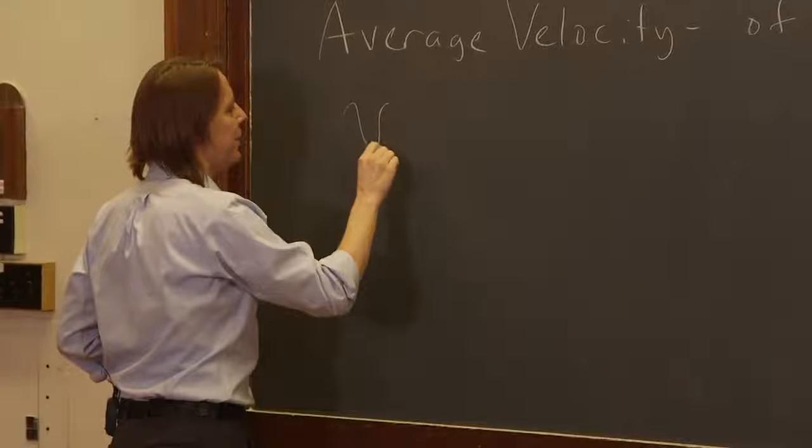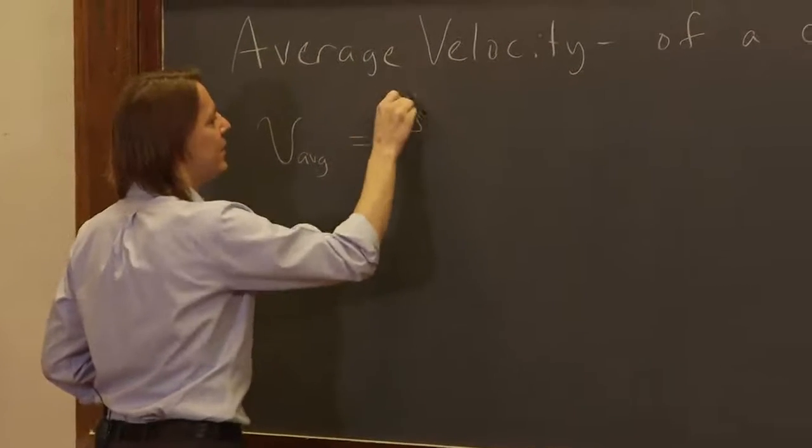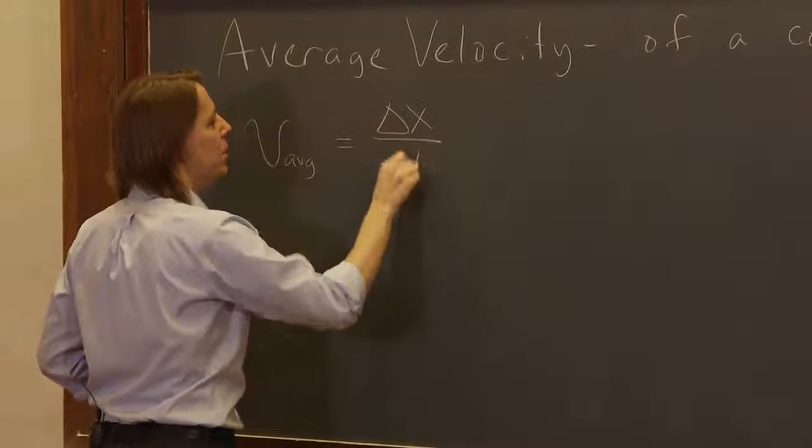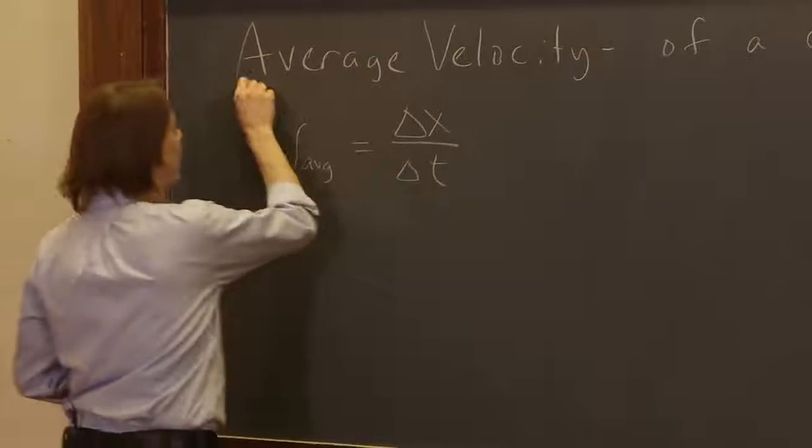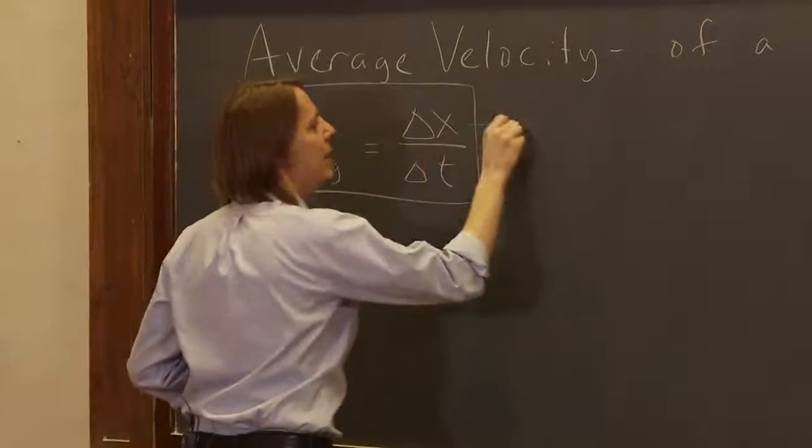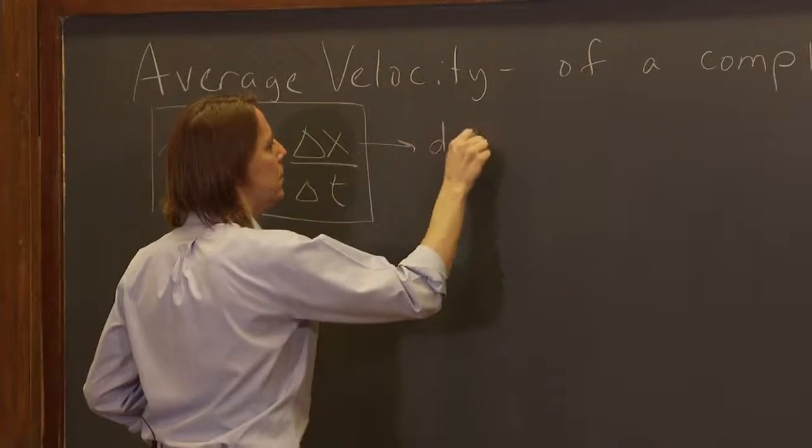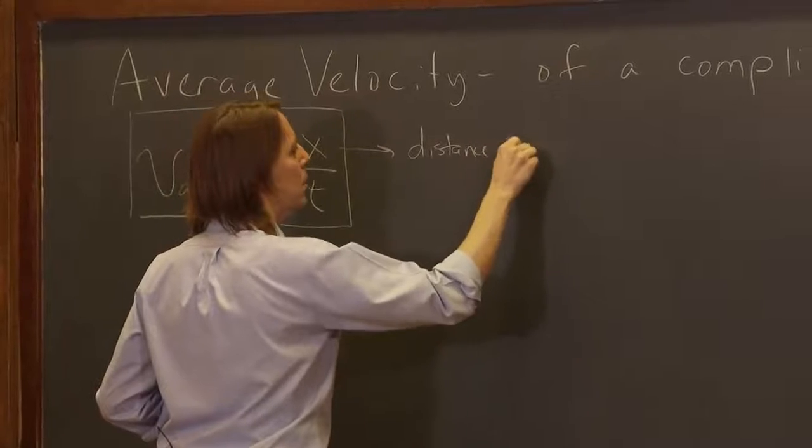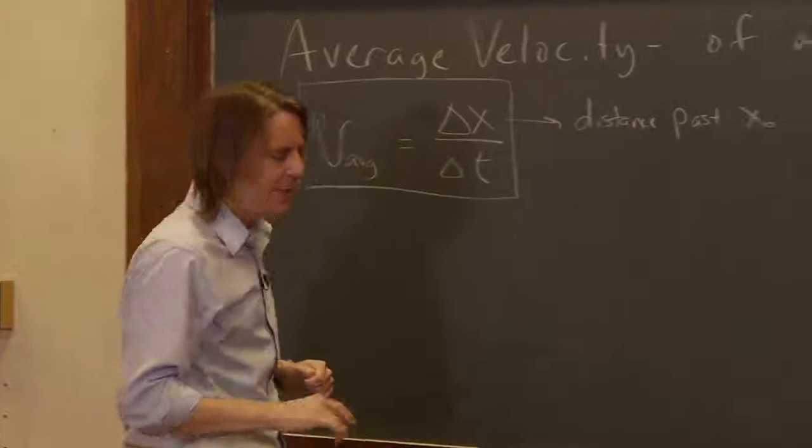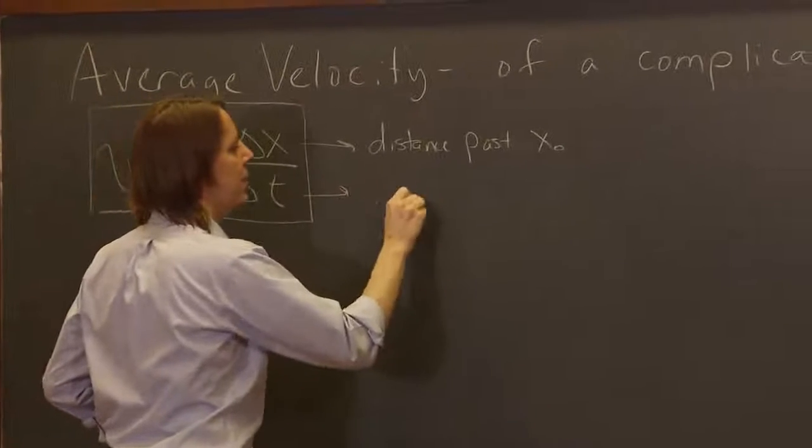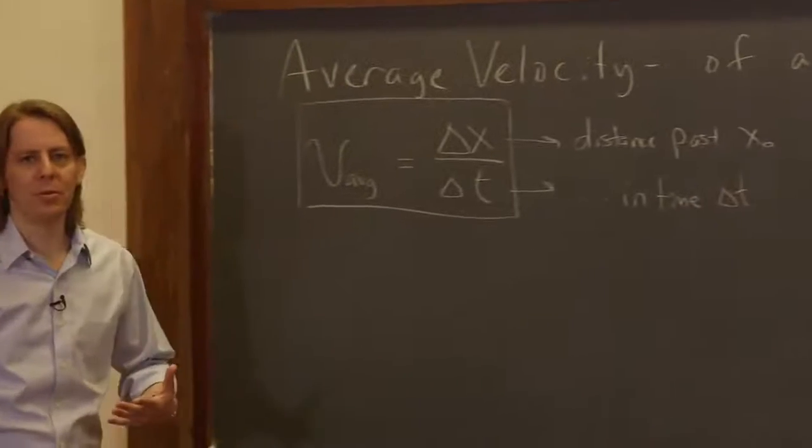Let's just define it mathematically first. There's our script v, a, v, g for average, and then it's delta x over delta t. So now, let's think about what those mean. I'll put a box around that, that's kind of an important one there. And delta x means the distance past x naught. And delta t means, in time delta t, in a time interval delta t.